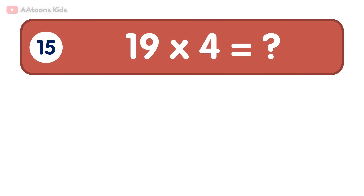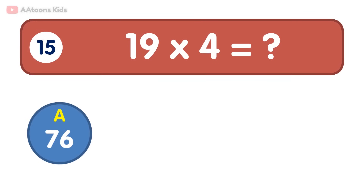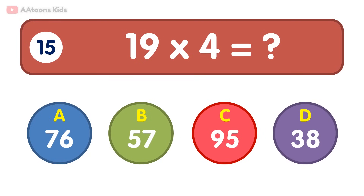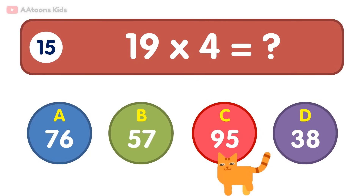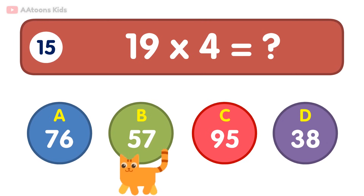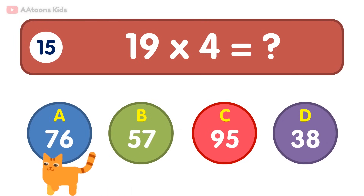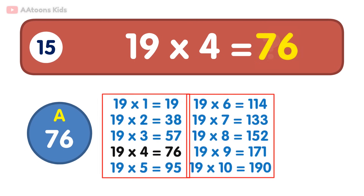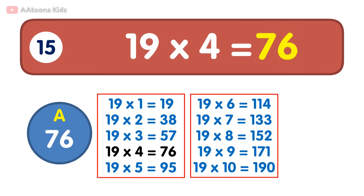19 times 4 is equal to 76. 19 times 4 is 76.